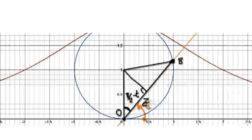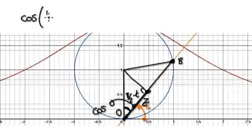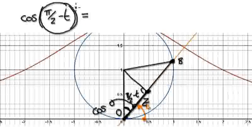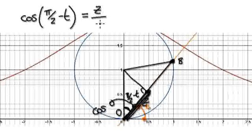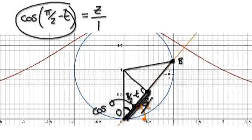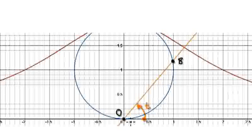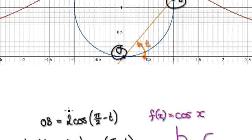So to find this length z from here to here, we use cosine. cos of the angle — the angle here is π/2 minus t — equals z over the hypotenuse, which is 1 (the radius of the circle). So z equals cos(π/2 minus t). Now we times z by 2, and that gives us OB — the distance from here to here. So OB is given by 2cos(π/2 minus t).